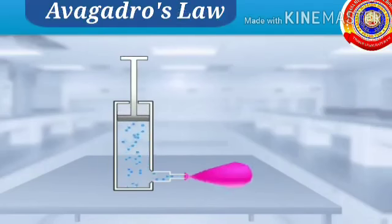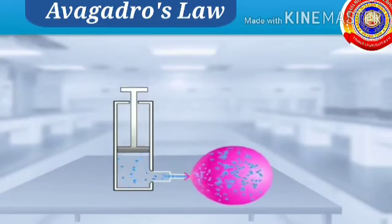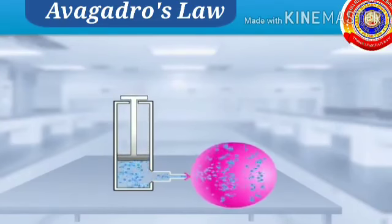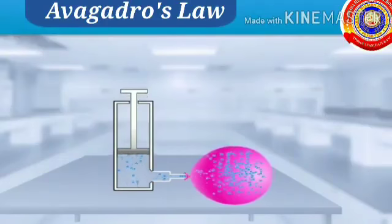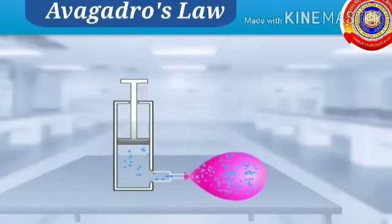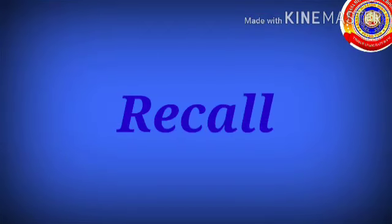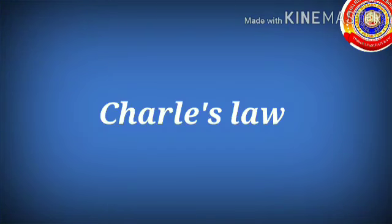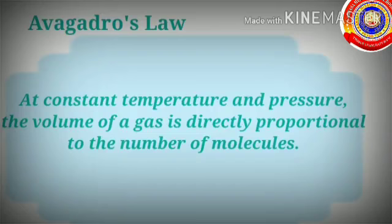Now observe this experiment. The change in size of the balloon as the number of molecules increases and decreases confirms the relation between V and N. In Avogadro's law, the volume of gas is directly proportional to the number of molecules. To recap what we learnt today: Charles' law states that volume and temperature are directly proportional to each other. In Avogadro's law, volume is directly proportional to number of molecules.